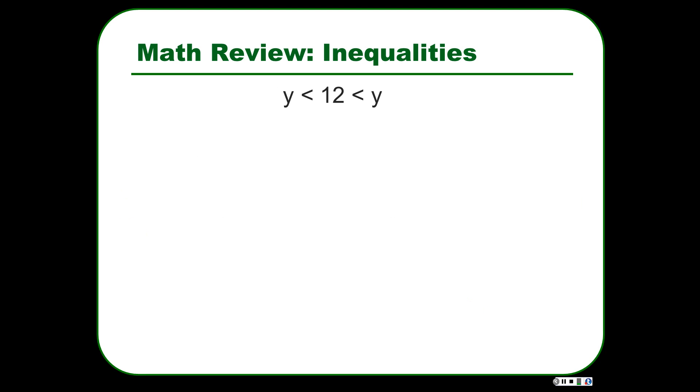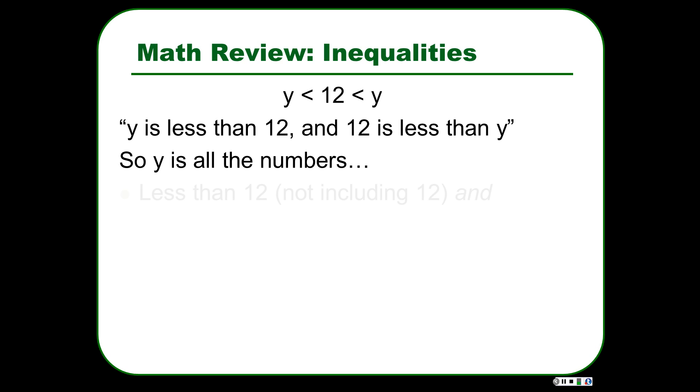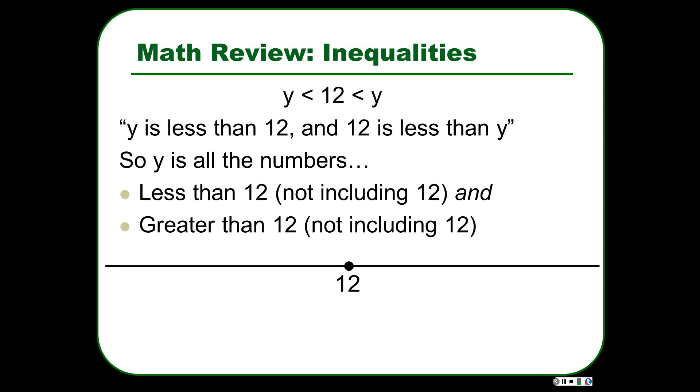So here's a different one. We have y on the outside of the inequalities. So we have one number on the inside and the variable is listed on the outside. And this is a way of saying that the variable is two ranges of numbers usually. So y is less than 12 and 12 is less than y. So y is all the numbers that are less than 12 not including 12 and greater than 12 not including 12. So it's just one number on the number line. And y is everything except 12. Y is everything except the exact point of 12. Now if we're dealing with integers, whole numbers, then it's all the whole numbers except 12. But if we're just dealing with continuous numbers, then it's everything except this super teeny point, this infinitely small point of 12.